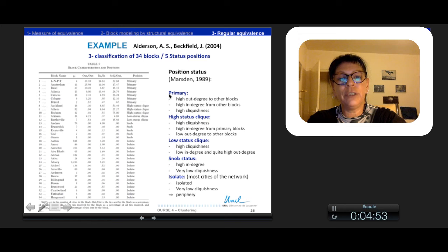The primary here corresponds to high out-degree towards other blocks, high in-degree, and high cliquishness. It is the core of the graph. Then they define also high-status clique with also high cliquishness, high in-degree, but a low out-degree.